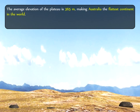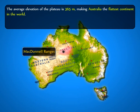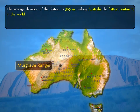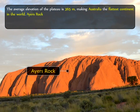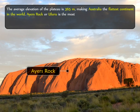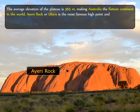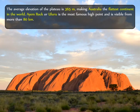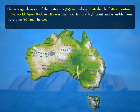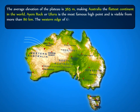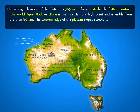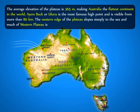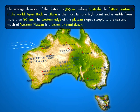The height increases only at the McDonnell and Musgrave ranges. Ayers Rock, or Uluru, is the most famous high point and is visible from more than 80 kilometers. The western edge of the plateau slopes steeply to the sea, and much of the Western Plateau is a desert or semi-desert.